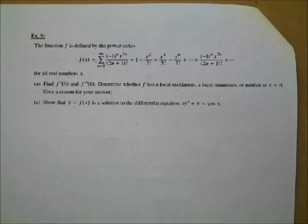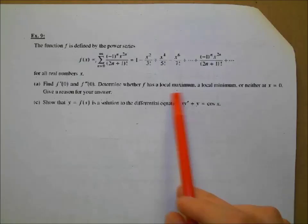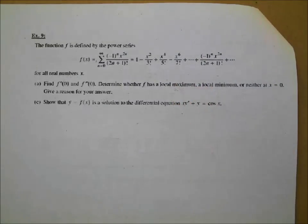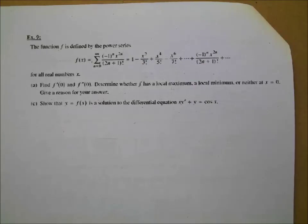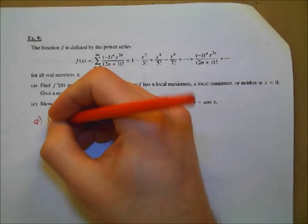The function F is defined by a power series for all real numbers x. Letter A says find F prime of zero and F double prime of zero, then determine whether F has a local maximum, local minimum, or neither at x equals zero. Let's first focus on finding F prime of zero — looking at our power series expansion, F prime of zero is going to be zero.